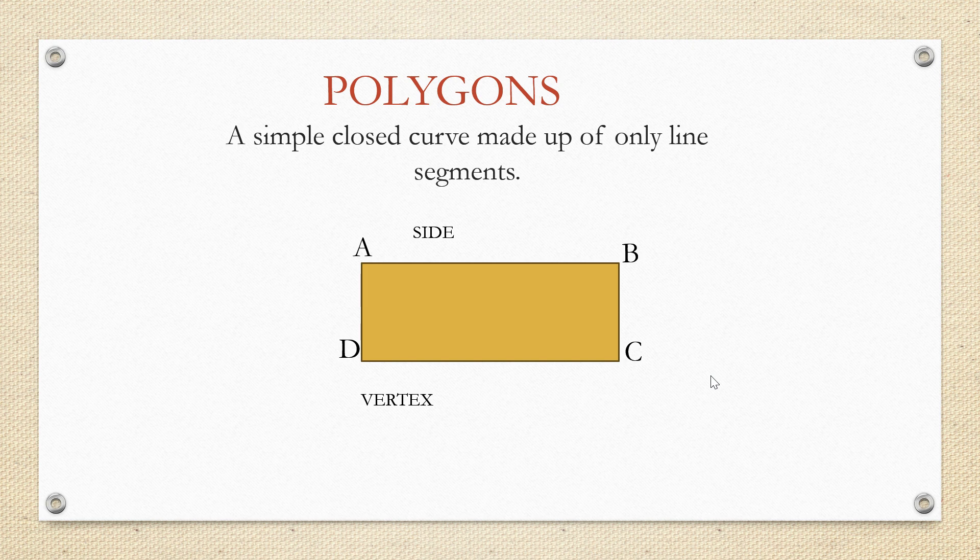CD and DA form adjacent sides with a common point at D. Adjacent vertices are the end points of the same side. Consider the side AB. In this point A and B are called adjacent vertices.